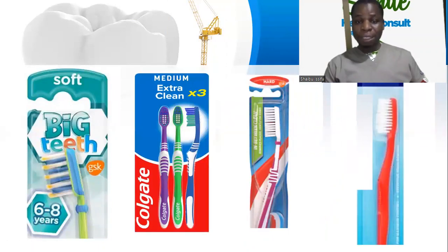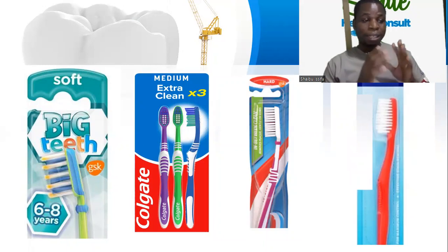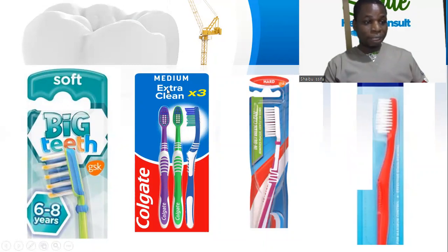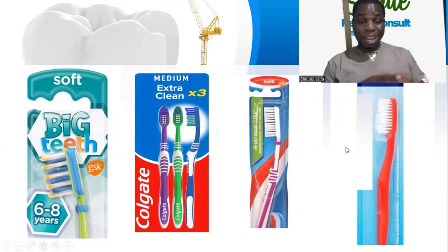We can also classify toothbrushes based on the nature of the bristle: is it hard, is it medium, or is it soft? The rating is shown on the pack. You may see 'soft,' 'medium,' or 'hard' written on it — either at the top, at the back, or sometimes on the body of the toothbrush. So when you buy your toothbrush, look at it carefully.